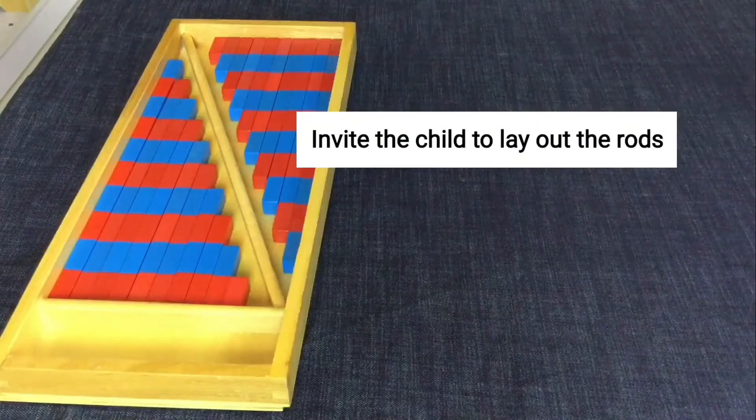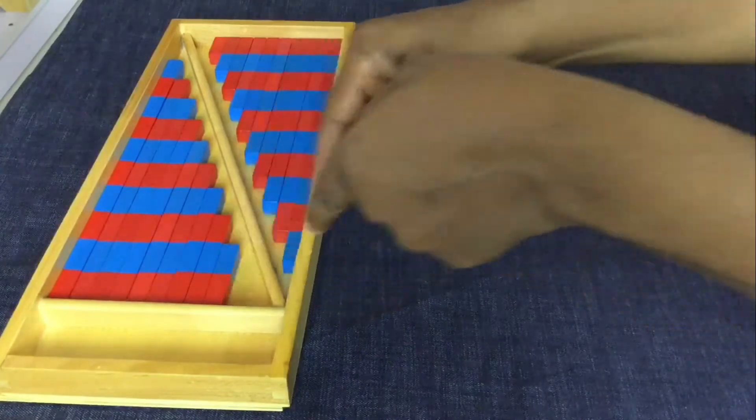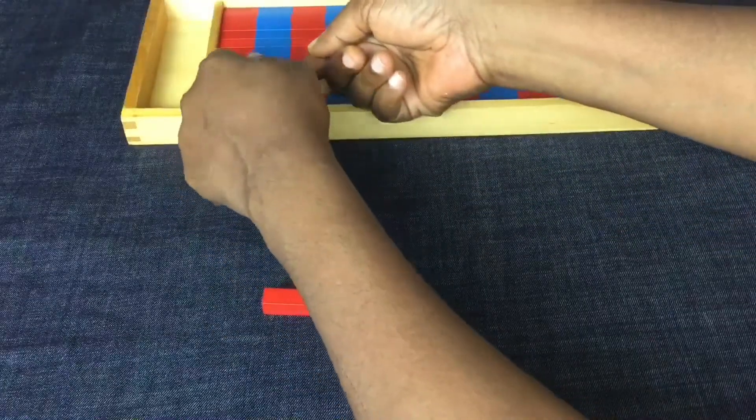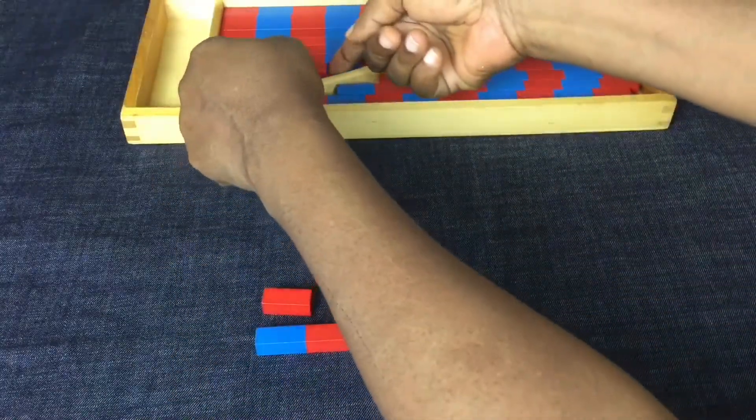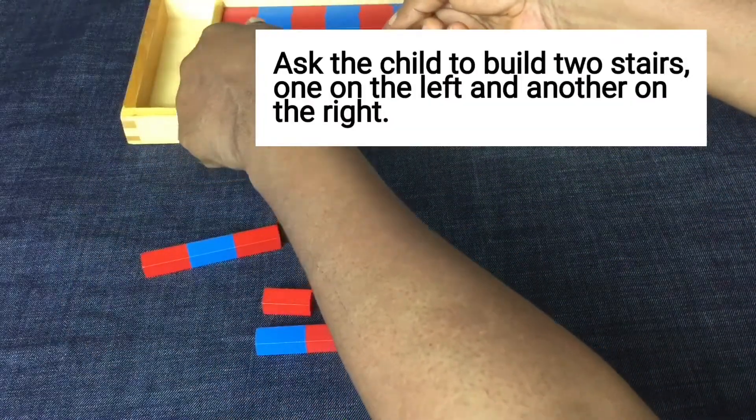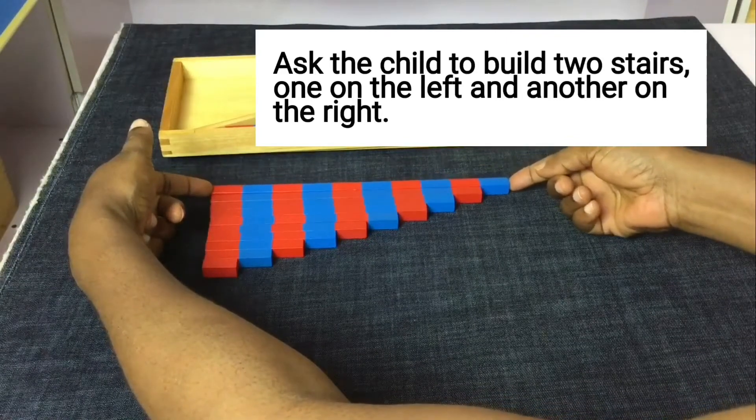Invite the child to lay out the rods. Ask your child to build two stairs, one on the left and another on the right.